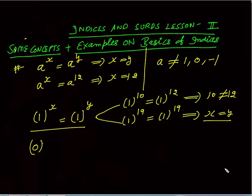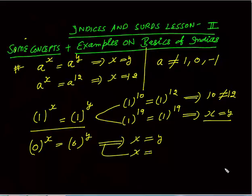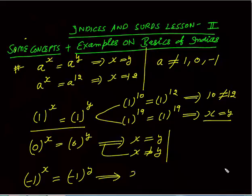What about zero? The same is true for zero: 0^x is always equal to 0^y whatever the value of x or y, so x and y may or may not be equal. The same applies to minus one: for (-1)^x = (-1)^y, it may or may not be true that x equals y.